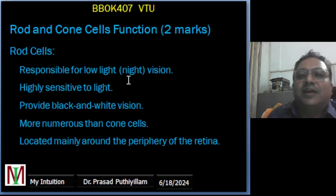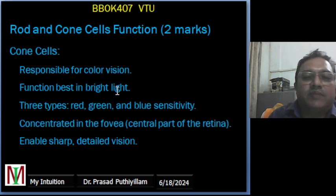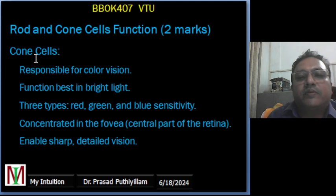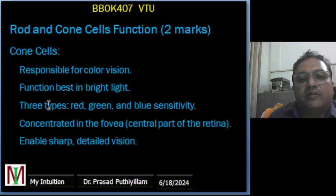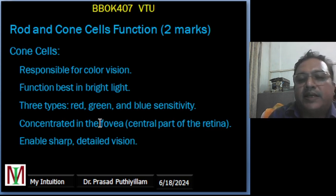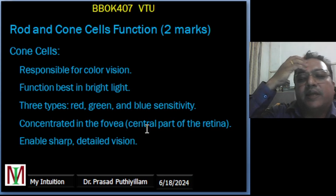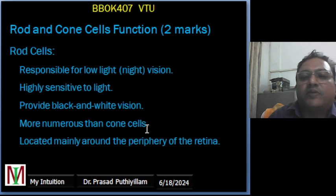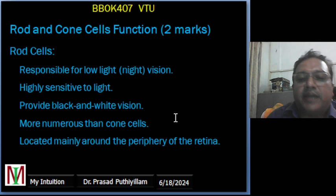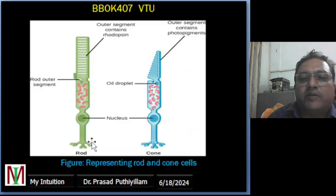Now the actual mark-scoring content begins: rod and cone cell functions. Cone cells are responsible for color vision and function best in bright light. There are three types — red, green, and blue sensitivity — concentrated in the fovea, the center of the retina, enabling sharp and detailed vision. Rod cells are responsible for low-light or night vision, are highly sensitive to light, provide black-and-white vision, are more numerous than cone cells, and are located mainly around the periphery of the retina.